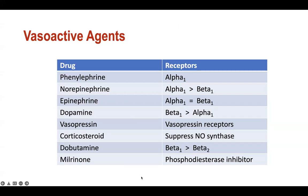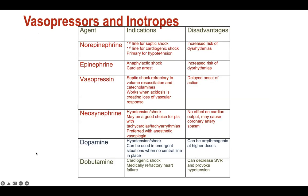Milrinone is a phosphodiesterase inhibitor. Vasopressin, corticosteroid, and milrinone don't fit into the basic alpha/beta criteria - they're agents we use for particular purposes. We use norepinephrine as first line for septic shock, and also if our patient has cardiogenic shock with profound hypotension. Epinephrine for anaphylactic shock, cardiac arrest, and post-pump. Vasopressin when the patient has refractory hypotension - refractory to volume and catecholamines. Some places like to use vasopressin as a primary agent alongside norepinephrine. Vasopressin is an agent that works even in the presence of profound metabolic acidosis.